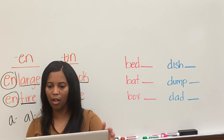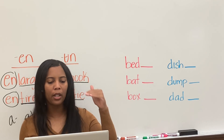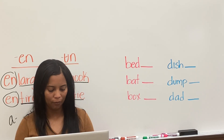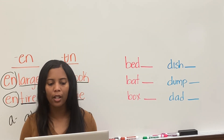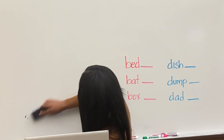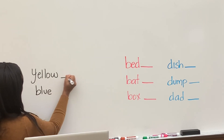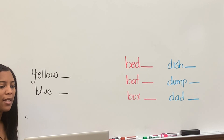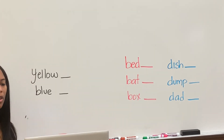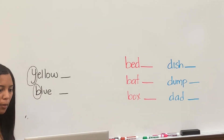Does anyone remember when we learned ABC order? It's when we put things in order of the alphabet. What should we look at to determine the order of the words? We always look at the first letter in order to put something in ABC order. So I'll say two words — two colors — to review: yellow and blue. Which one would go first in ABC order? We look at the Y and the B. Which one comes first in the alphabet?